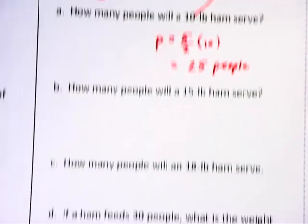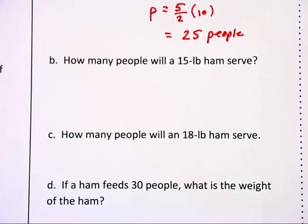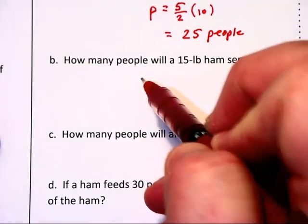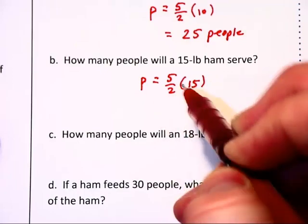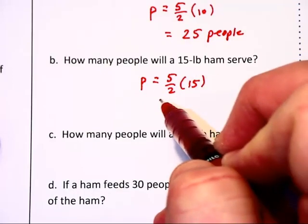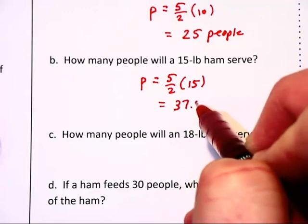How many people will a 15 pound ham serve? Well, P will equal 5 halves times 15, which will be 75 over 2, which is 37.5.